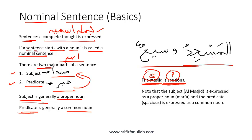If we said Al Masjidu Al Wasiun — in other words, we also had an Al or a proper noun associated with Wasi — then the translation would be 'the spacious Masjid.' So that would be a compound. If we wanted to say 'a spacious Masjid,' we would say Masjidun Wasiun. With a sentence, the subject is in proper noun form and the predicate or Khabar is expressed as a common noun.